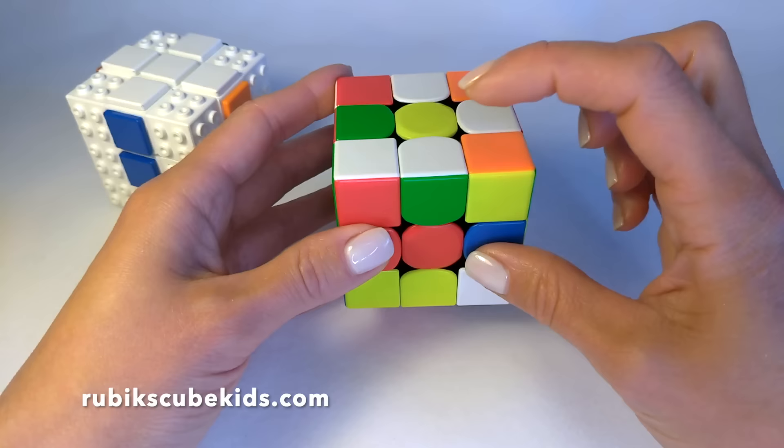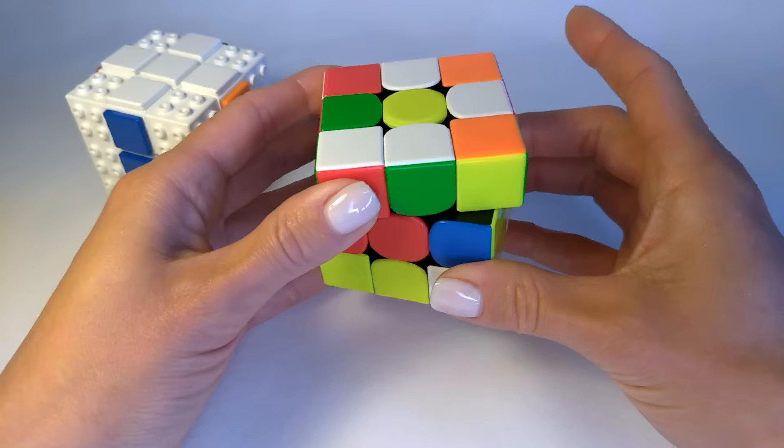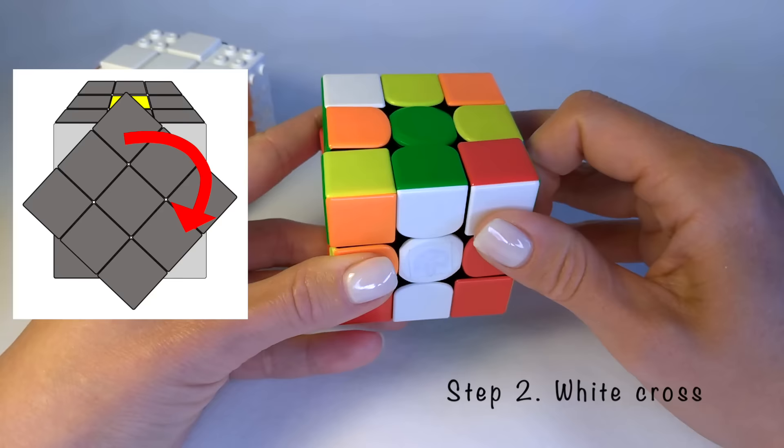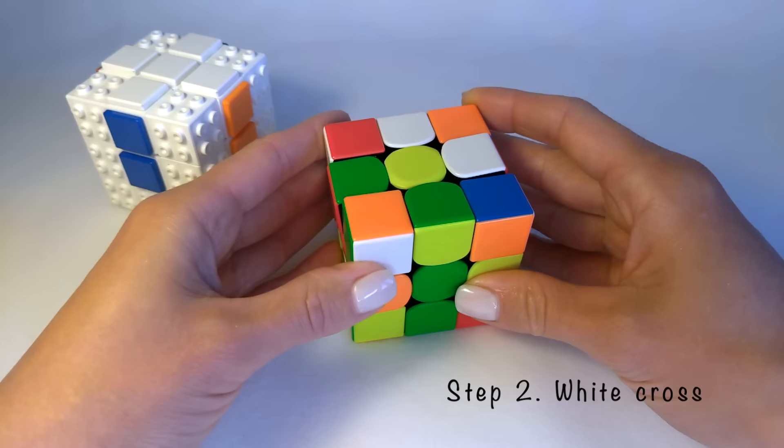Now let's spin the cube one more time. And find this white green edge. I'm going to find a green center. Rotate the two bottom layers and match this edge with a green center. Let's turn the front side clockwise twice. One. Two. Now this white green edge fits between white and green centers.